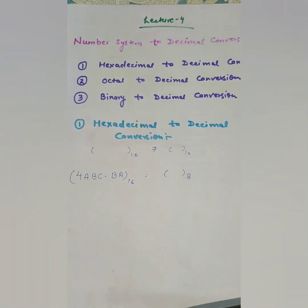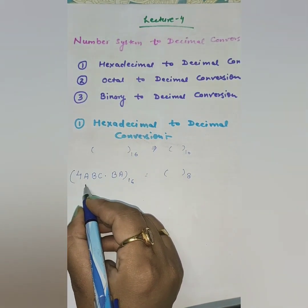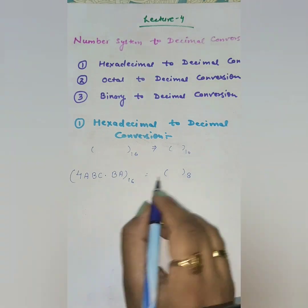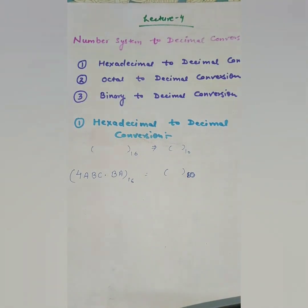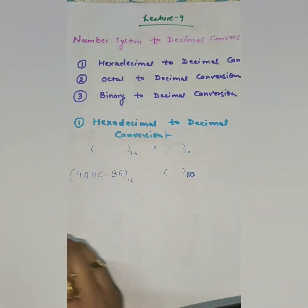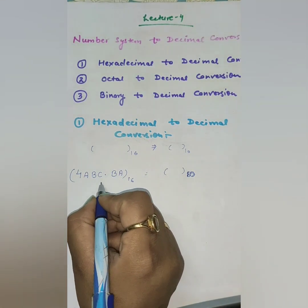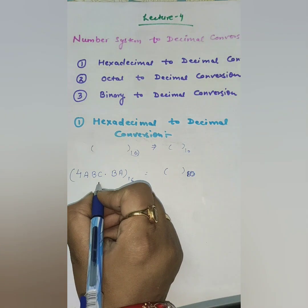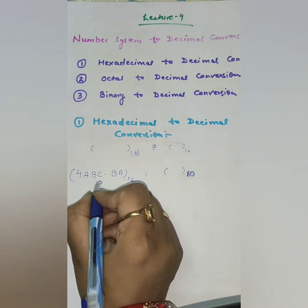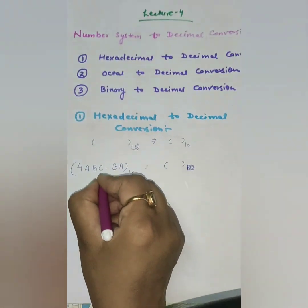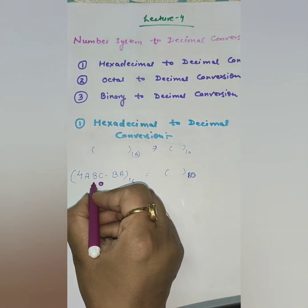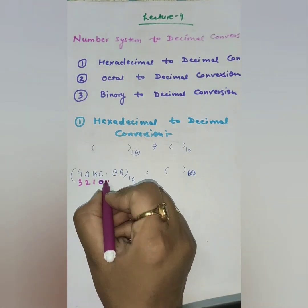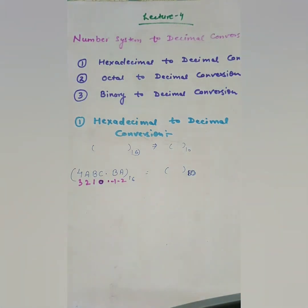Let's suppose we have to convert 4ABC.BA₁₆ to decimal. For hexadecimal conversion we take the power of the base, which is 16. For the integer part, the powers will be 0, 1, 2, and 3 from right to left. For the fractional decimal values, the powers will be minus 1 and minus 2.